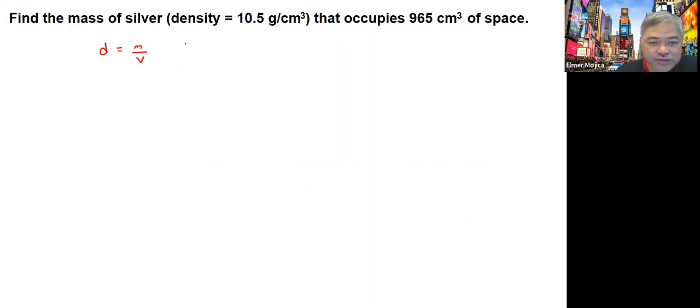So you have the density, 10.5 grams per cubic centimeter, multiplied by 965 cubic centimeters. You'll get an answer around this value.